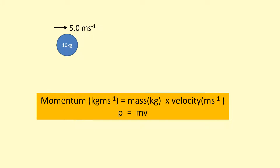Moving objects have momentum. The momentum can be calculated by doing mass times velocity. For example, this ball has a momentum of 10 times 5, which is 50 kilogram meters per second. In fact, this is plus 50 kilogram meters per second because I'm going to define right as positive.